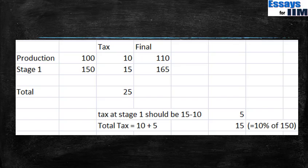So the total tax becomes Rs. 10 plus Rs. 5, which is Rs. 15 — which is also 10% of Rs. 150. To look at it another way, if I remove all taxes, he purchased the input for Rs. 100 and after adding value it became Rs. 150. The value added is Rs. 50 (Rs. 150 minus Rs. 100). He should only pay 10% of that Rs. 50, which is Rs. 5. So Rs. 10 in the first production stage and Rs. 5 in the second stage gives a total tax of Rs. 15.